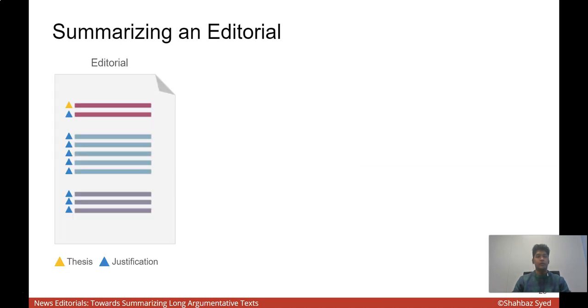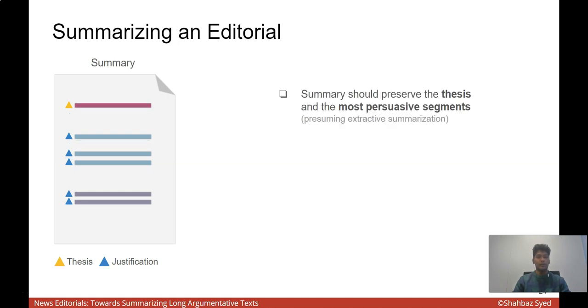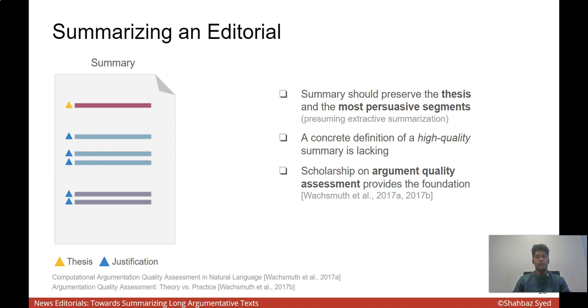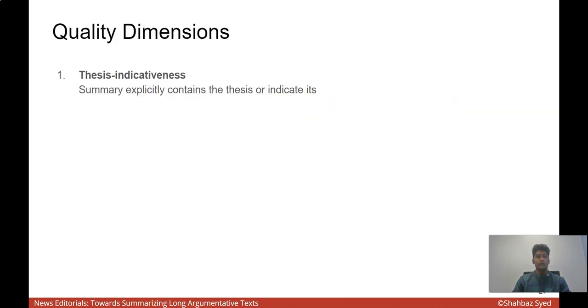Given this overall structure, it is possible that some justifications are more persuasive than the others. So, to summarize an editorial, we hypothesize that the summary preserves the thesis as well as these most persuasive segments. However, since we are aiming for a high-quality summary, we need to first define what a high-quality summary is. We look at related work on argument quality assessment to establish such definition. We primarily derive a list of quality dimensions that a high-quality summary should have. The first of which is thesis indicativeness, which means the summary should explicitly contain the thesis, if possible, or at least the statements that indicate this thesis.